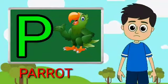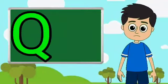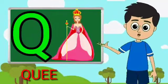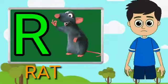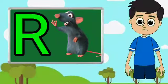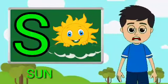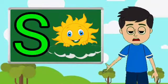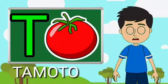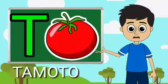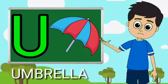P for parrot, Q for tune, R for rat, S for sun, T for tomato, U for umbrella.